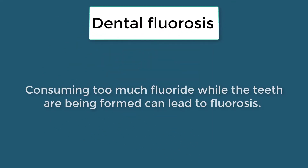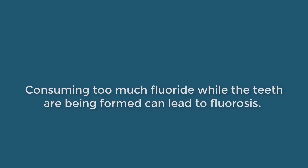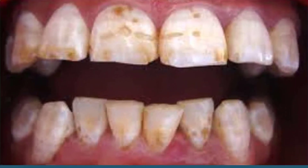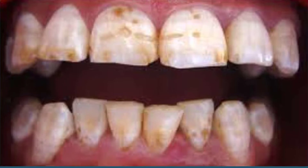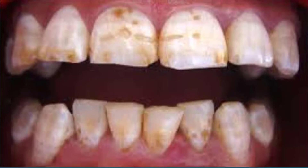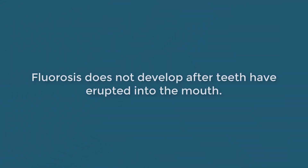Dental fluorosis: consuming too much fluoride while the teeth are being formed can lead to fluorosis. This condition causes white or brown discoloration or spots on the enamel or tooth surface. The effects can range from minor color changes to surface irregularities of the teeth. Fluorosis does not develop after teeth have erupted into the mouth.